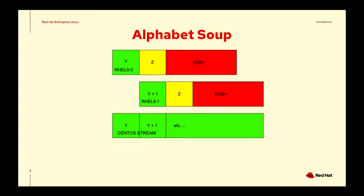I'm going to come back to this slide at the end and give a little more explanation about the other two rows, but the top row labeled RHEL 9.0 indicates development windows. The green part here is a six-month window in which we develop RHEL 9.0. All that work occurs on CentOS Stream. Eventually we move to the next minor release, and then RHEL 9.0 goes into Z-stream development. Every six weeks we release a kernel on that Z-stream, or thereabouts — they might happen faster due to CVE issues.